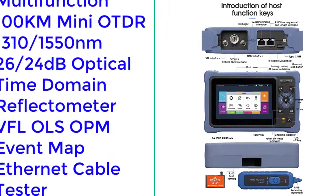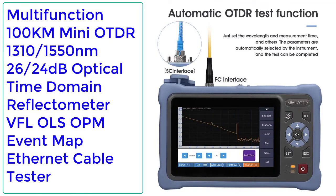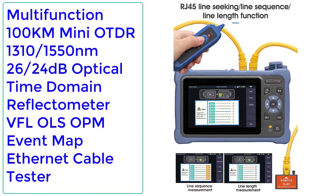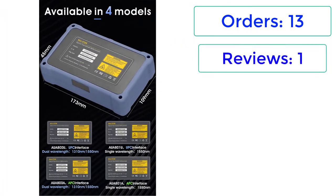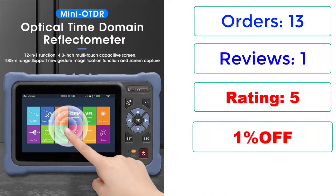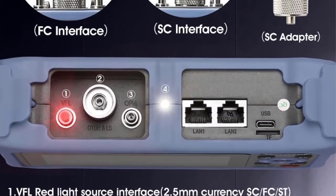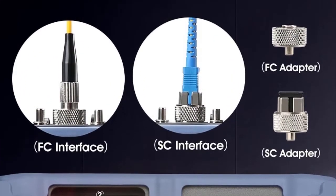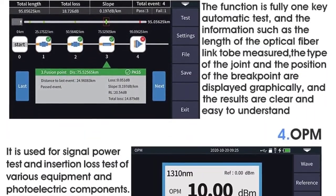Number 5: Multifunction 100KM Mini OTDR, 1310/1550nm, 26/24dB, Optical Time Domain Reflectometer with VFL, OLS, OPM, Event Map, and Ethernet Cable Tester. Orders: 13, Review: 1, Rating: 5. Price: $289.90. Specifications — Brand: COMPTYCO, Fiber Type: Single Mode, Origin: Mainland China, Connector Type: Hybrid.